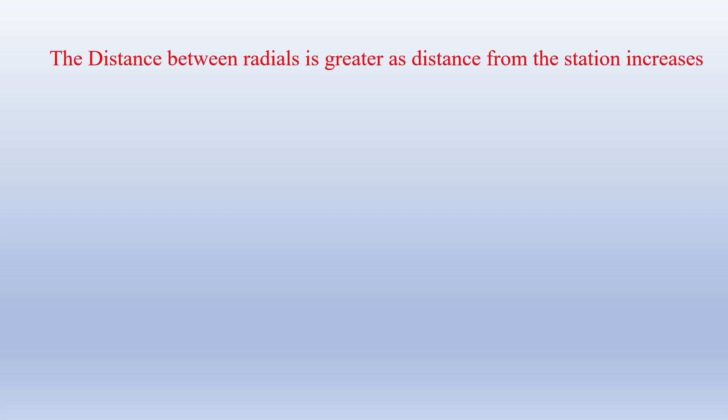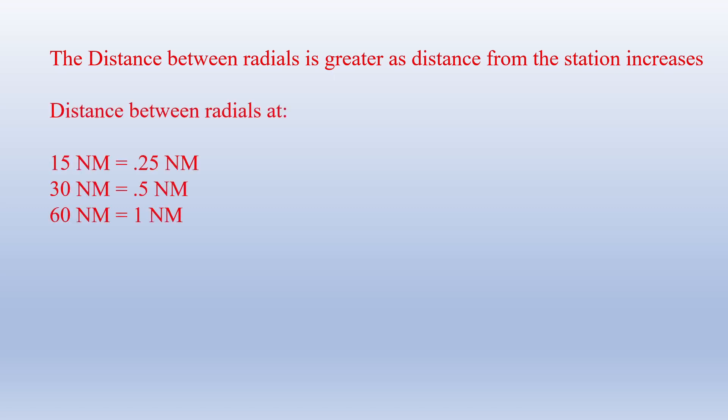Since radials fan out from the station, they get further apart as they get further from the station. The distance between radials depends on your distance from the station. At 60 nautical miles from the station, each radial is one nautical mile from the next one. So at 30 nautical miles, there's a half-mile distance between radials, and a quarter-mile distance between them when you are 15 miles from the station.